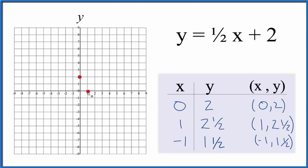Next, x is one and y is two and a half. So we'll put that right there. Finally, we have a negative one for x and a one-and-a-half for y. So we go to negative one and y is one-and-a-half, right there. So those three points, they line up.